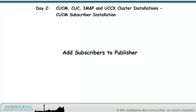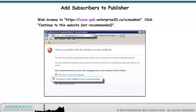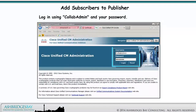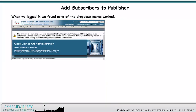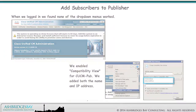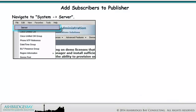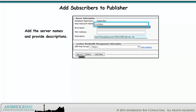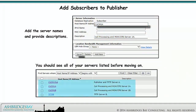First we add the subscribers to the publisher. Launch your browser — we use Internet Explorer — and web browse to this address. Ignore the security warning and click Continue to this website. Log in using Collab Admin, the application username you configured during installation, and your password. When we logged in, we found none of the drop-down menus worked, so we enabled Compatibility View for CUCMPub, adding both the name and the IP address. Navigate to System > Server and click Add New. Add the server names and provide descriptions. You should see all of your servers listed before moving on.